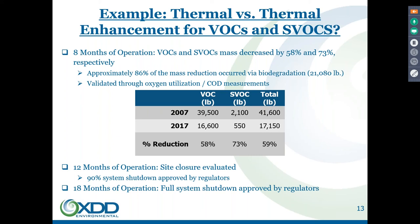It ended up that the treatability study showed about 80% of the removal was through biological processes. What came out of that treatability study — Paul talked about treatability studies and their role in remedial design — was that a biological process at 40 degrees centigrade was the primary mechanism that was going to reach this aggressive schedule in the most cost-effective manner.